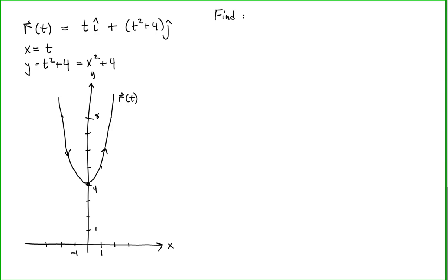Our goal is to find the scalar tangential and the scalar normal components of acceleration, and there are a couple of different ways we could do this. The acceleration of a point on a curve has a component that is tangent to the curve and a component that is normal to the curve at any particular point. Let's qualitatively illustrate that.